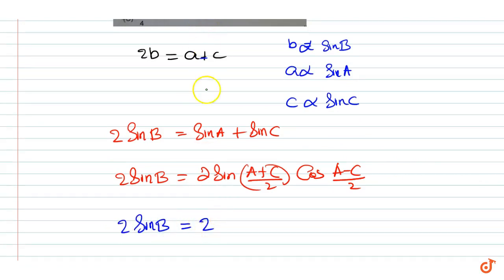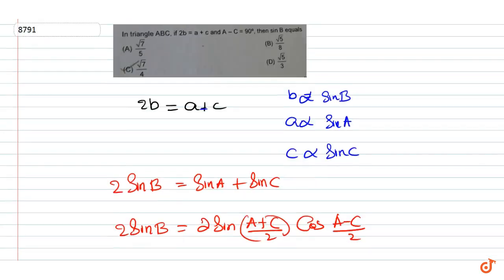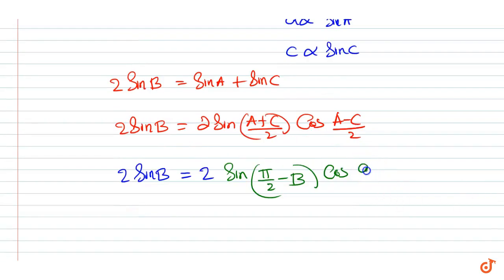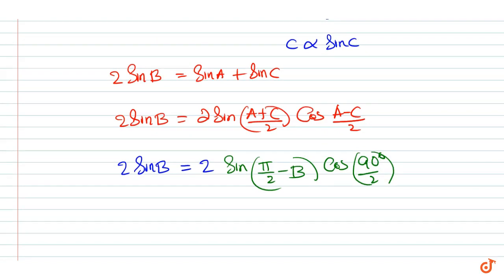Sine of (a plus c) by 2 is sine of (pi by 2 minus b), and cos of (a minus c) by 2 is cos of 45 degrees. This gives sine b is equal to cos of b by 2.